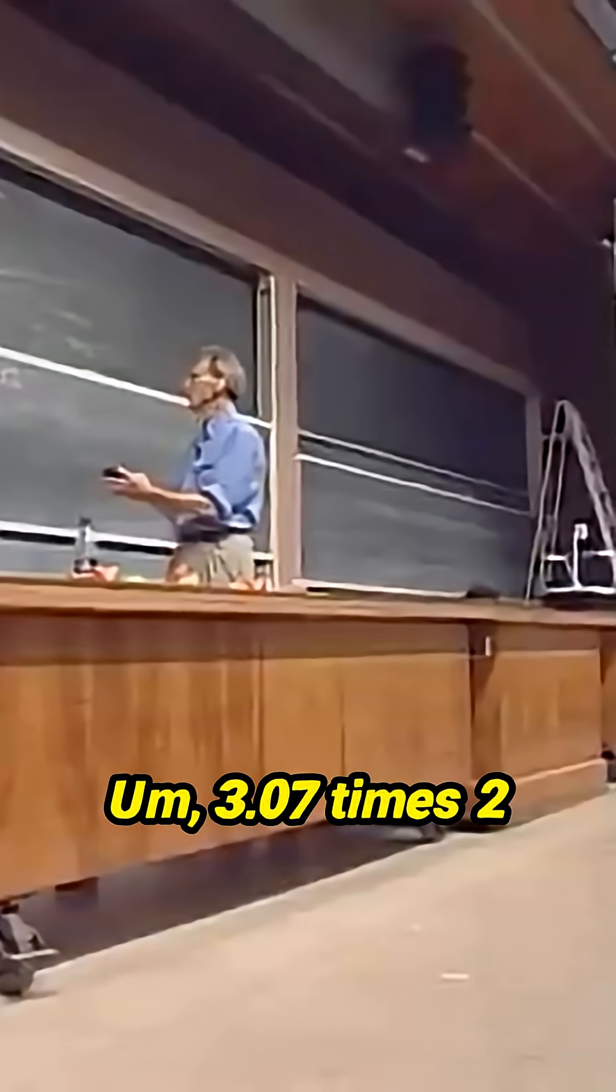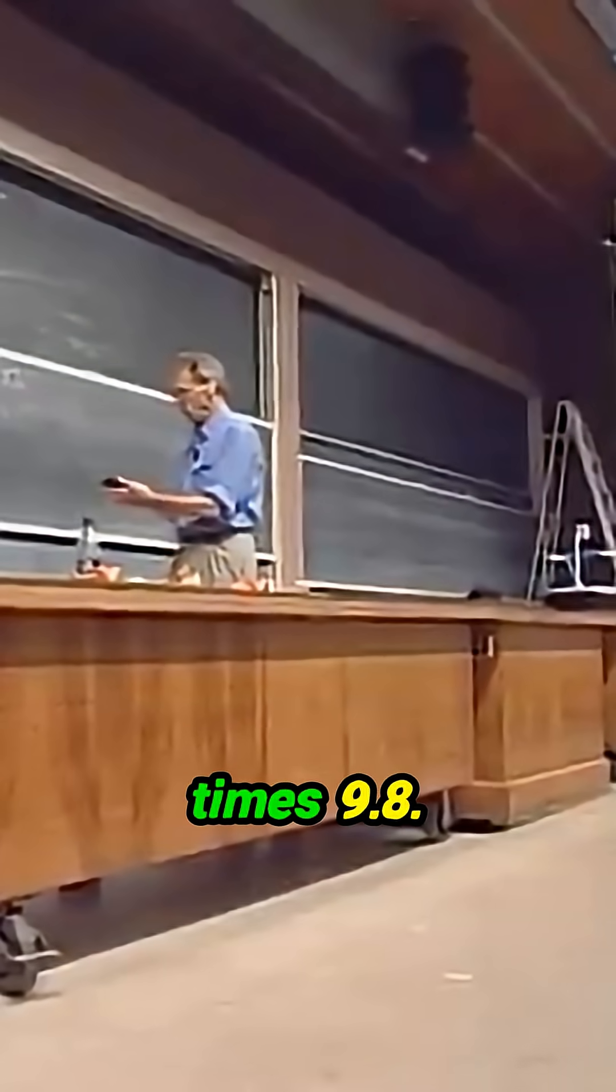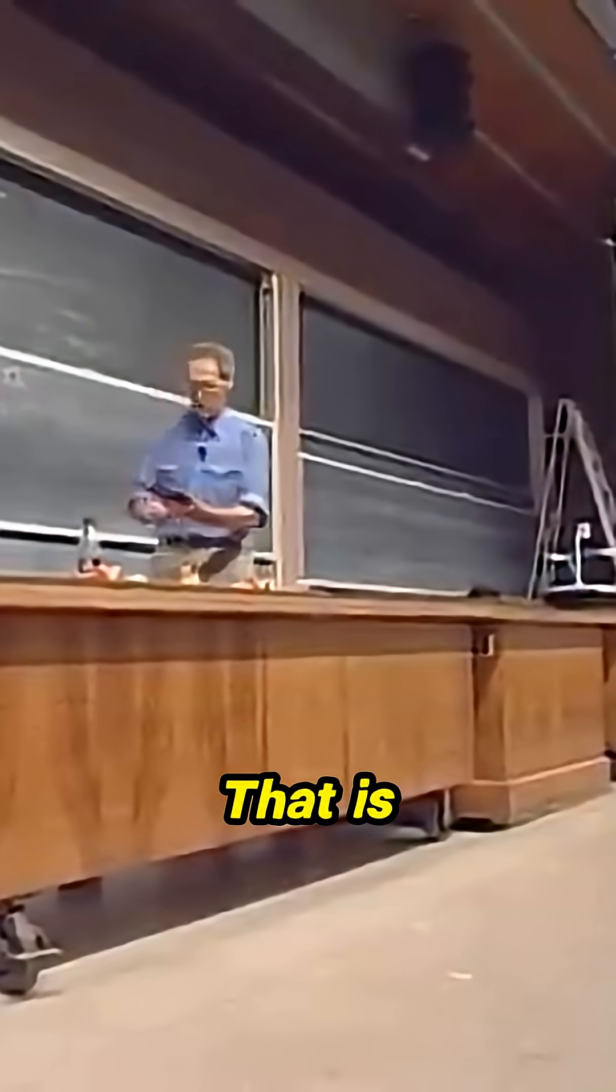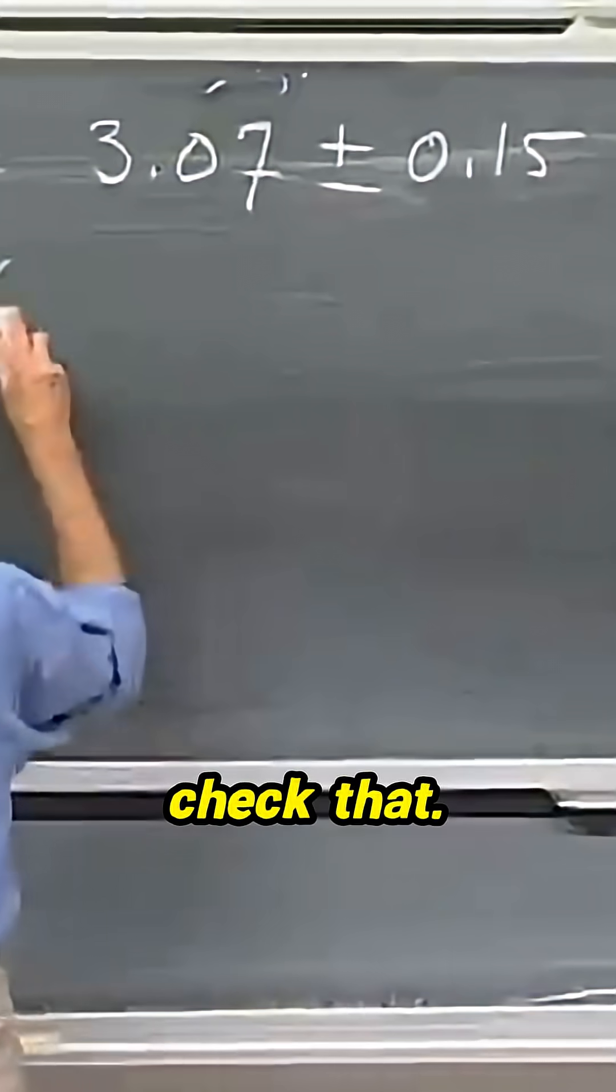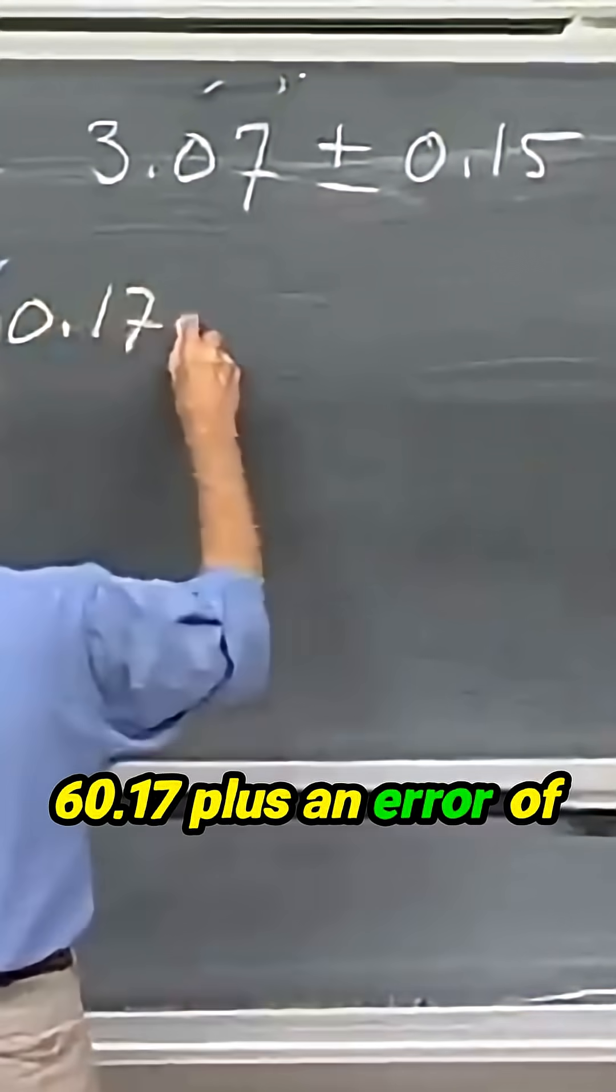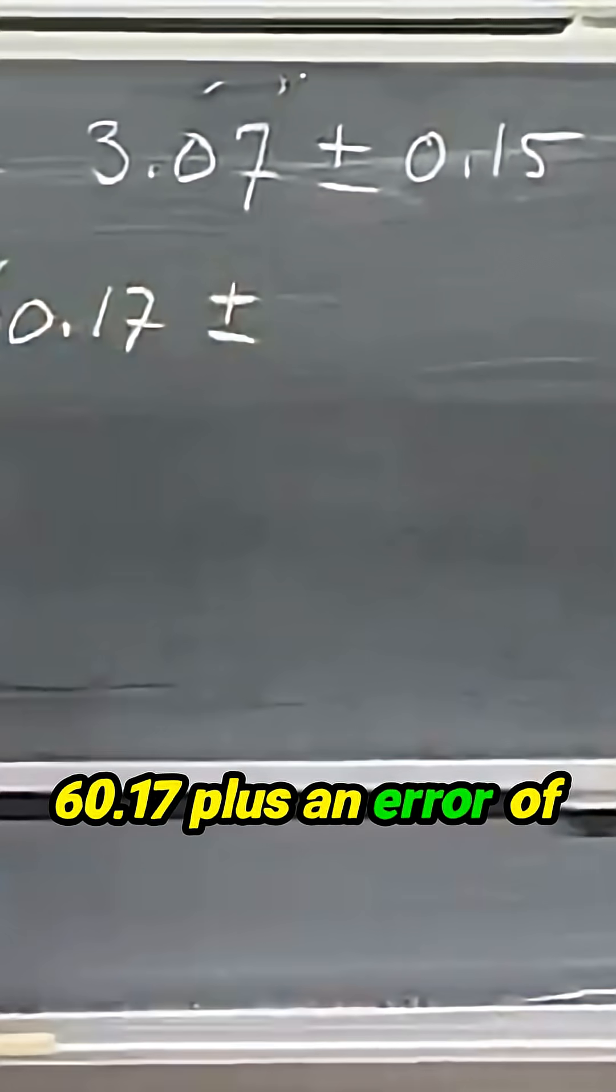3.07 times 2 times 9.8, that is 60.17. I'd like you to check that.